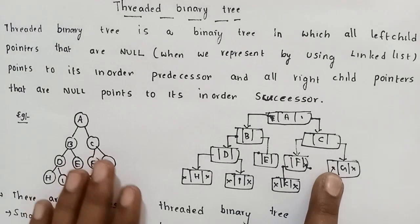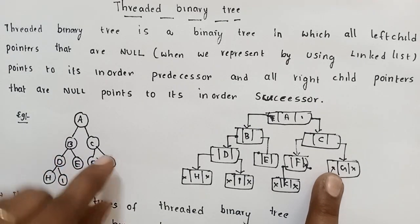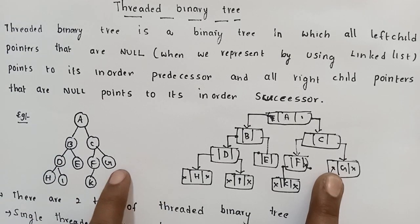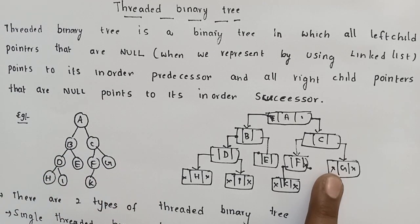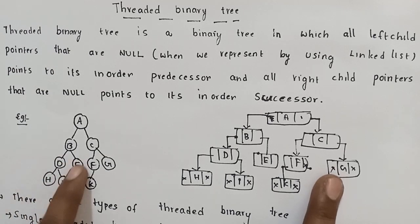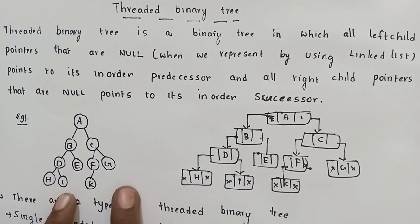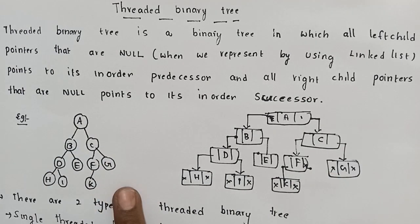We will write the in-order traversal. In the in-order traversal, the in-order sequence is the main element. For example, if we look at the in-order, the in-order visits the left sub-tree, then the root, then the right sub-tree.